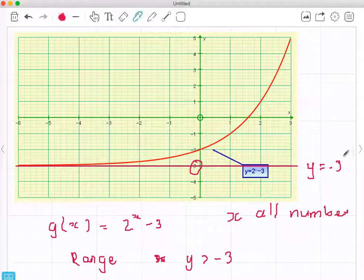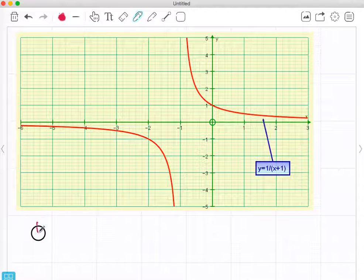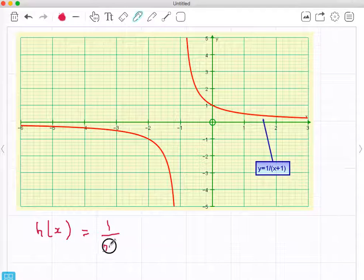Let's look at the last one. And the last one is h(x) equals 1 over x plus 1. And let's just look at the graph to begin with. Here's the graph and it just breaks there and it breaks there.